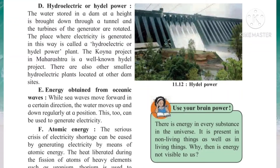Hydro means water — so electricity is generated by using water, and that plant is called the hydroelectric or hydro power plant. The Koina project in Maharashtra is a well-known hydro project.